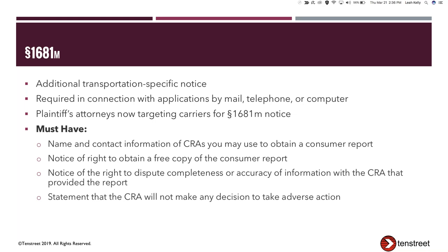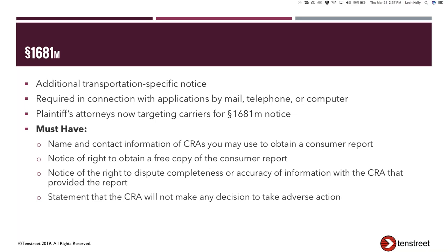The 1681M notice requires you to provide: the name and contact information of the consumer reporting agencies you'll use to obtain consumer reports; notice of the applicant's right to obtain a free copy of their consumer report; notice of their right to dispute the completeness or accuracy of information with the consumer reporting agency; and a statement that the consumer reporting agency will not be the one making decisions to take adverse action. We'll provide sample 1681M language. Note: if you're following the verbal exception, you'd have to read all of this including contact information aloud over the phone.